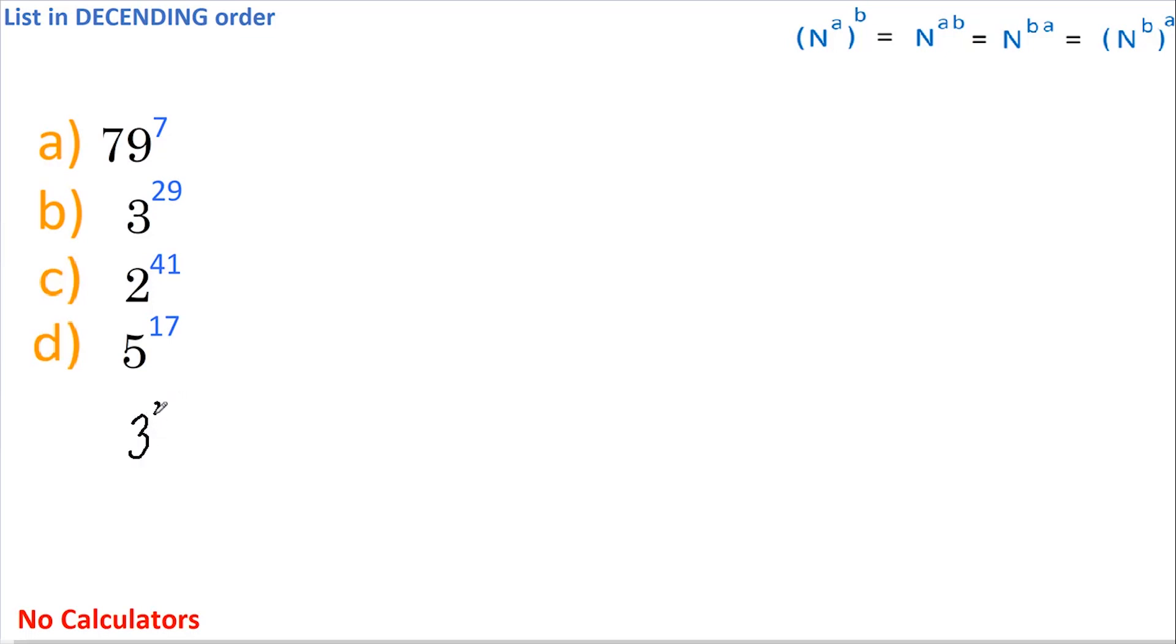If I start with b, which is 3 to the power of 29, and then I square this and then take the square root of it all, this has no overall effect since squaring and then taking the square root cancel each other out.